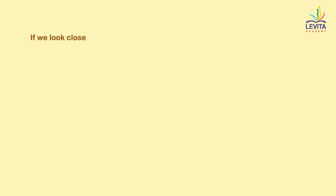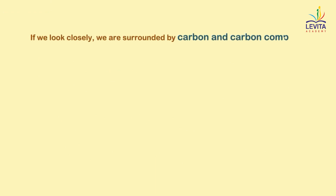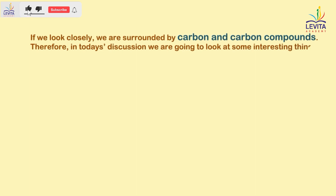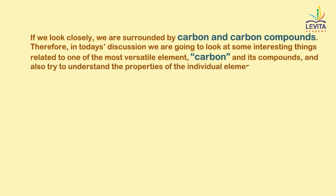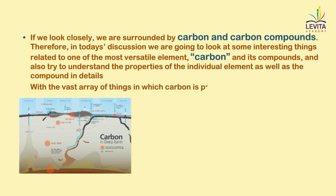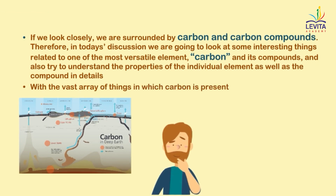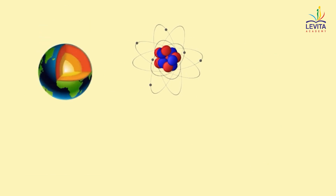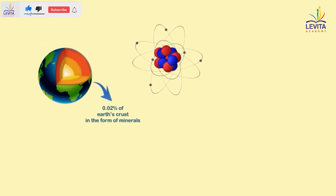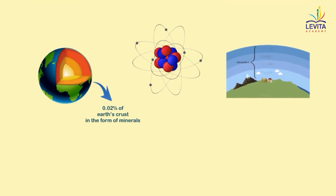So, if we look closely, we are surrounded by carbon and carbon compounds. Therefore, in today's discussion, we are going to look at some interesting things related to one of the most versatile elements — carbon — and its compounds, and also try to understand the properties of the individual element as well as the compounds in detail. With the vast array of things in which carbon is present, many of us might think it is due to the abundance of carbon on earth. But surprisingly, carbon constitutes only about 0.02% of earth's crust in the form of minerals and around 0.03% of the atmosphere in the form of carbon dioxide.